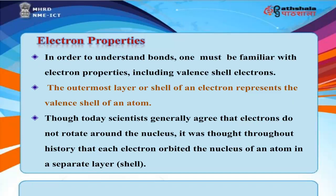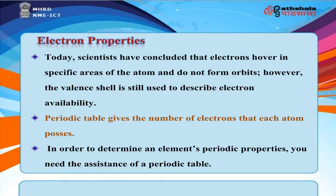In order to understand bonds, one must be familiar with electron properties, including valence shell electrons. The outermost layer or shell of an electron represents the valence shell of an atom. Though historically it was thought that each electron orbited the nucleus in a separate shell, scientists today have concluded that electrons hover in specific areas of the atom and do not form orbits. However, the valence shell is still used to describe electron availability.